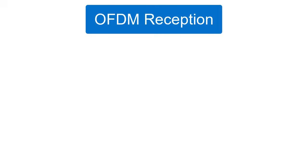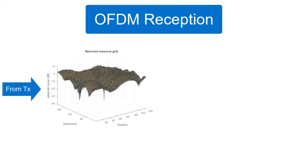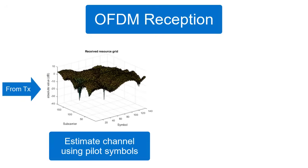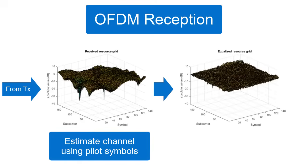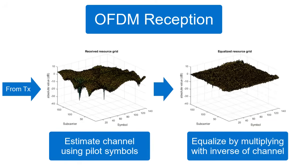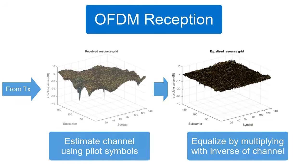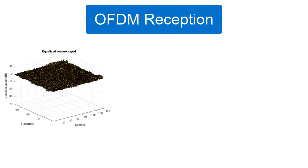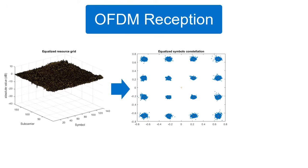At the receiver, the reference signals are first recovered, then used to estimate the channel. This channel can then be used to equalize the received symbols. In OFDM, equalization reduces to a complex scalar multiplication. After equalization, we obtain the modulated symbols, which are then demodulated and decoded to yield our original data raw bits.